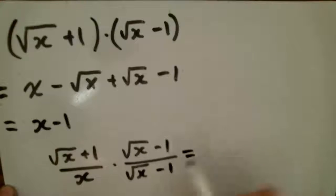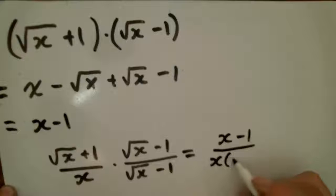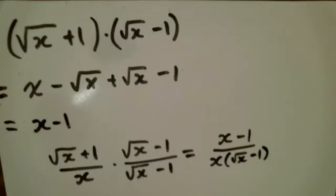and this would end up looking like this: x minus 1 over x times the square root of x minus 1. And so this might help us out at some point in helping to evaluate our limits.